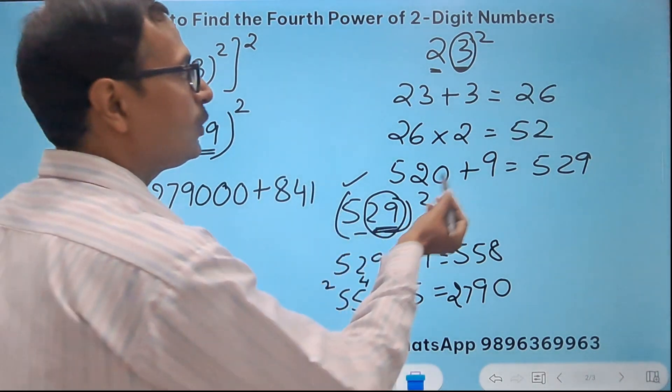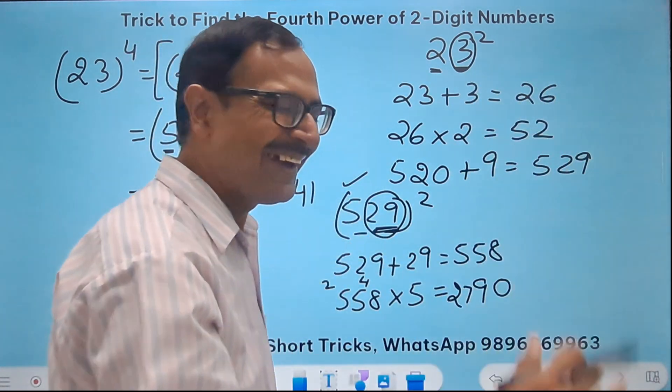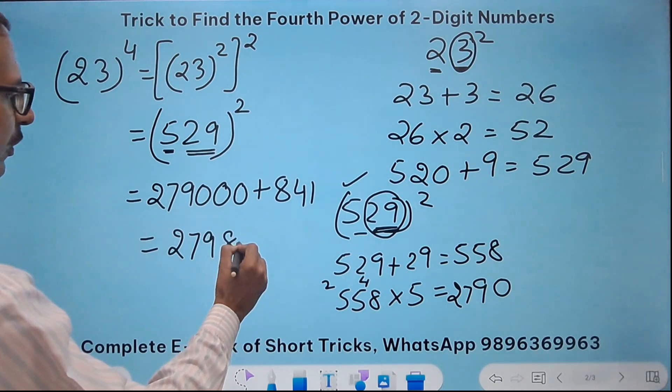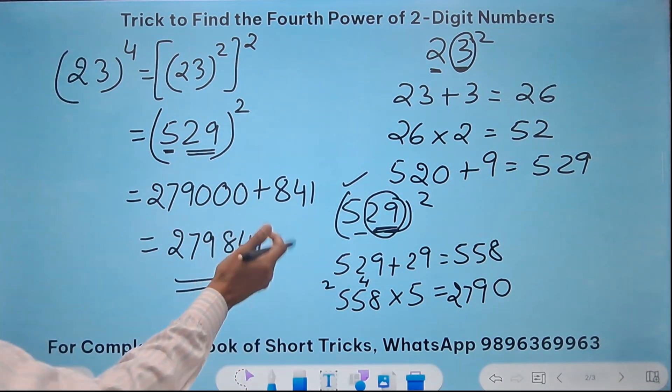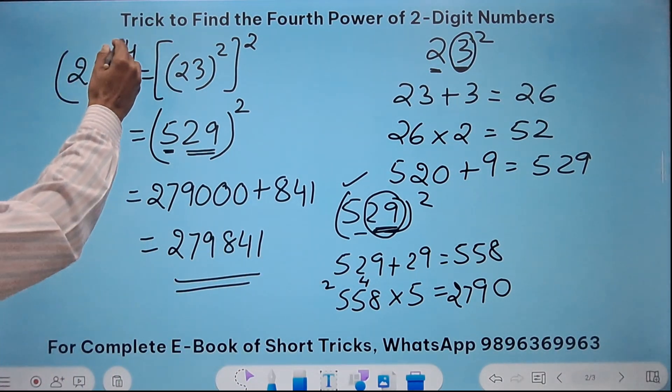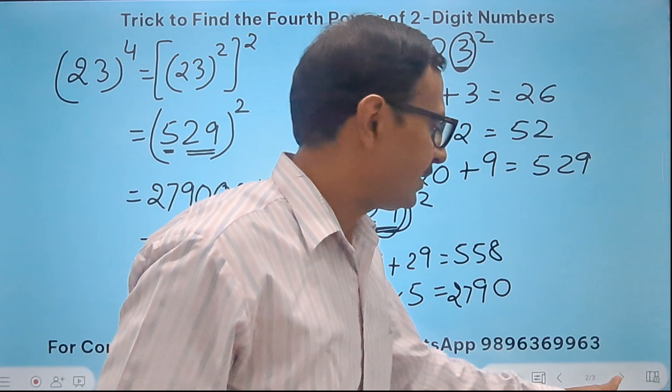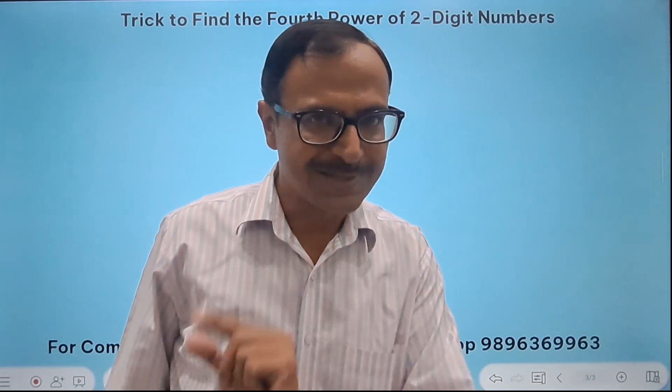Now if you don't know the square of 29 you can find it like this. Okay? So what is the answer? 279841. Just check using the calculator. Is 23 raised to power 4, 279841? And you will be really amazed that the method doesn't go wrong even once.